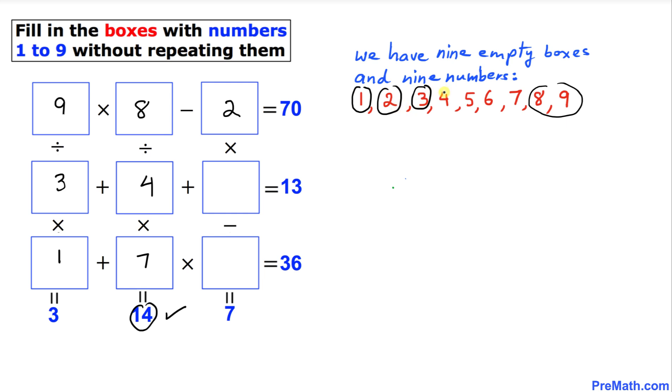Here is our final step. We have just got two empty boxes and we got only two numbers left, 5 and 6. Here we can see if I just put 6 over here, we get 3 plus 4 plus 6 equals 13. Indeed. The only number that is left is 5. Let's go ahead and see: 5 times 7 is 35 plus 1 is 36. Indeed.